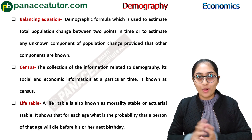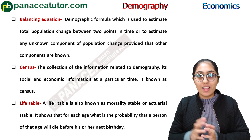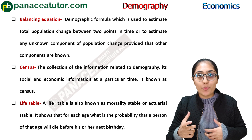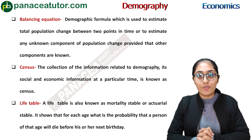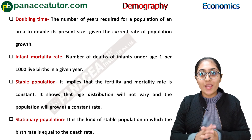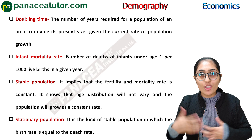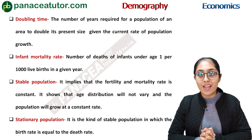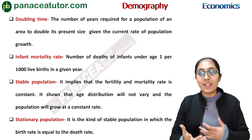Life table, also known as actuarial table, measures the probability of people dying before their next birthday. It only measures probability — people may or may not die before their next birthday. Doubling time means the time taken by the population of an area to double — for example, if the population of India takes 10 years to double, the doubling time for India is 10 years. Infant mortality rate means the number of deaths of infants under age 1 per thousand live births in a year.